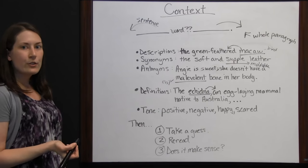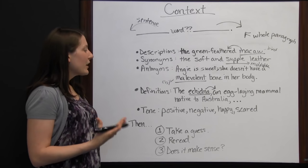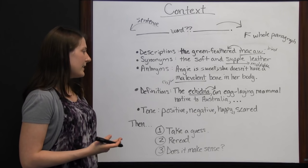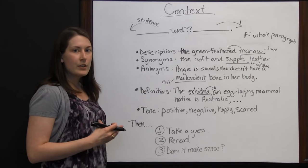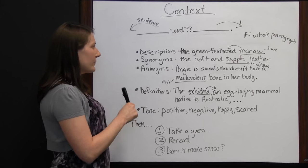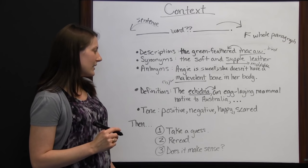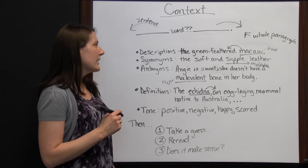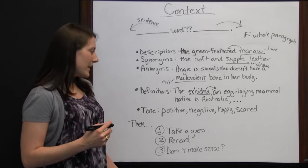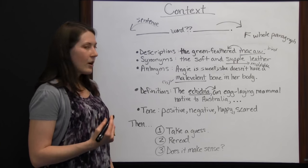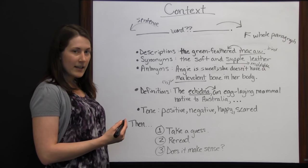The last clue you can look for is tone. Is the rest of the paragraph positive, negative, happy, or scared? If you have a paragraph that's all one tone, then the unfamiliar word probably has something to do with that tone. If it's a scary tone, the word may relate to something scary. If it's positive, it may be a happy kind of word. You can always take that into consideration when making your educated guess.